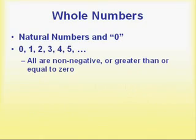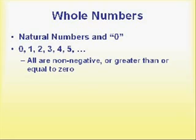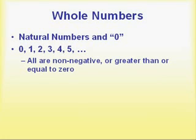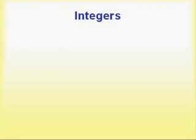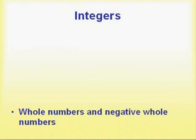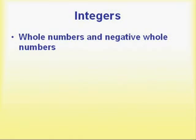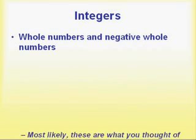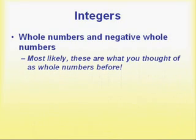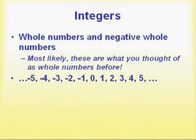Notice all of these numbers are non-negative — they're either greater than or equal to zero. That brings up another question: what do we do with the negative numbers? When we take the whole numbers and add to it the set of negative numbers, we get the set of integers. These are all the positive and negative whole numbers and zero — most likely what you thought of before when you heard the words whole numbers.